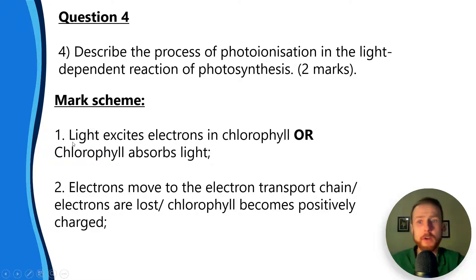First mark is for saying light excites electrons in chlorophyll or the chlorophyll absorbs light. The second mark is for saying that the electrons move to the electron transport chain, slash electrons are lost, slash chlorophyll becomes positively charged.